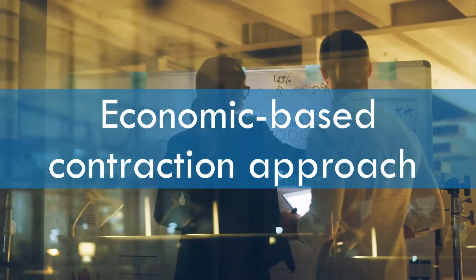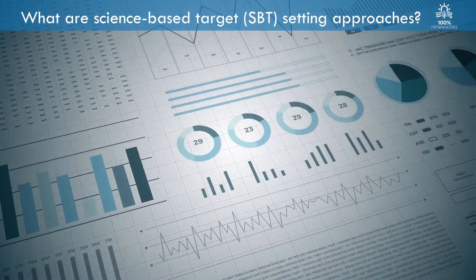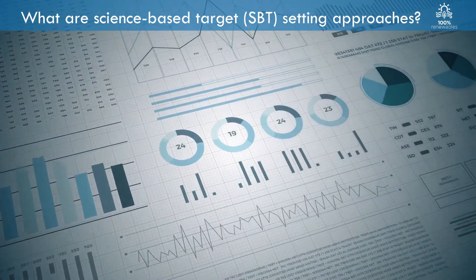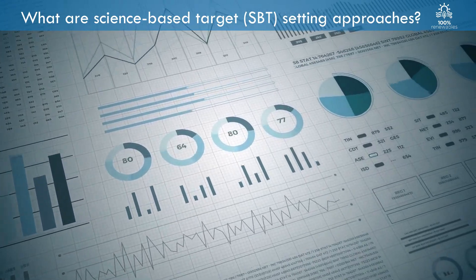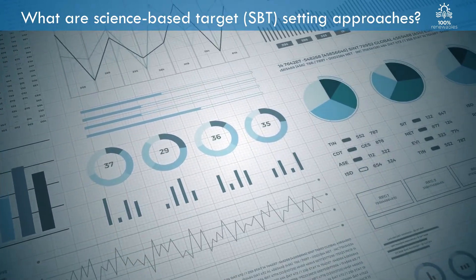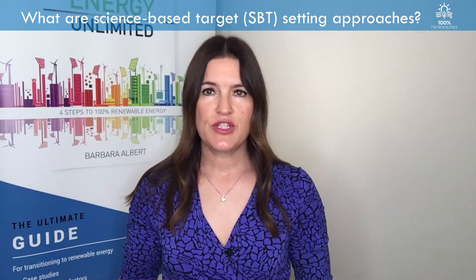The third is the economic-based, which is also a contraction approach. A carbon budget is equated to the global gross domestic product, and the company's share of emissions is determined by its gross profit, since the sum of all companies' gross profits worldwide equate to global GDP.